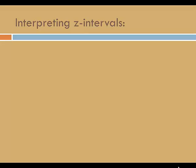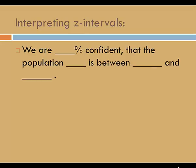How do we interpret z intervals? Here's a template. We are blank percent confident that the population blank is between blank and blank.